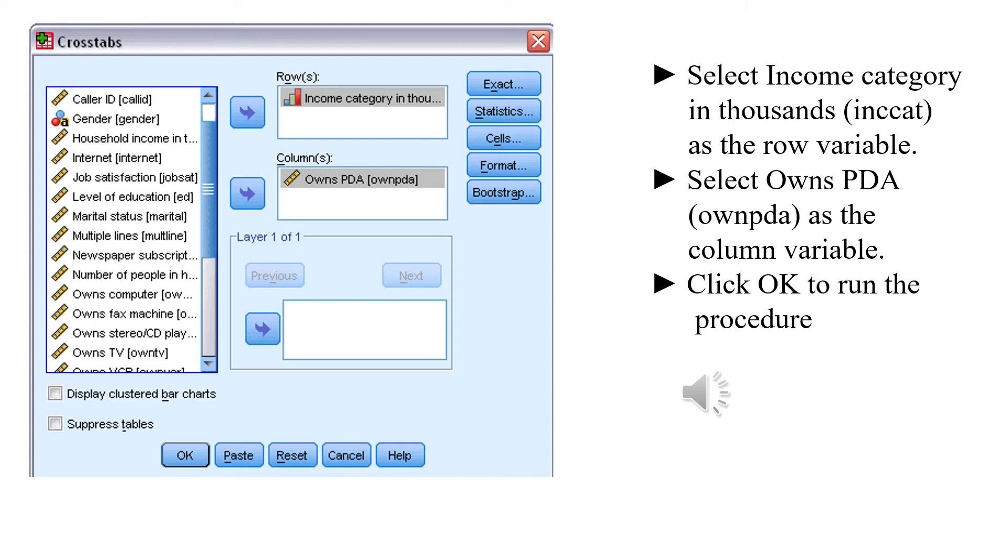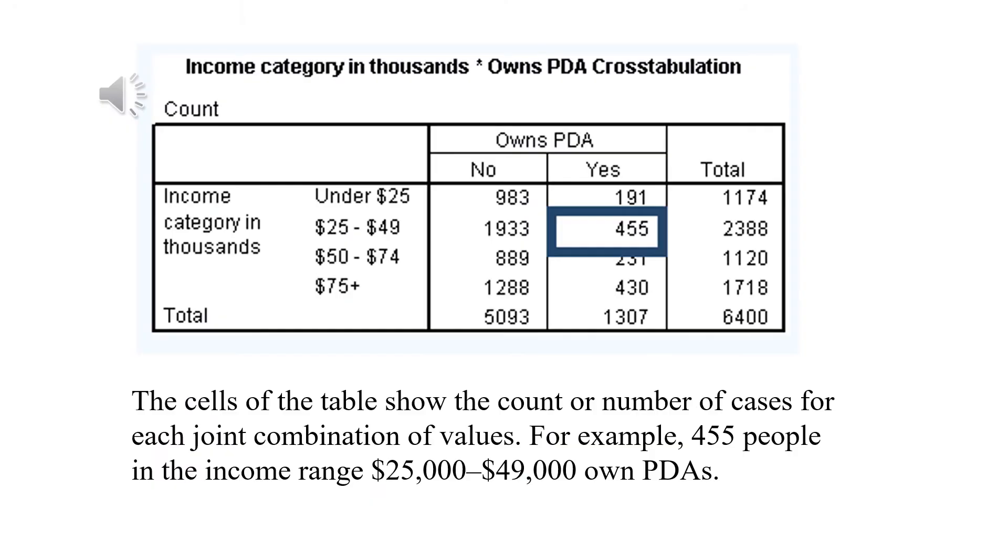the variable will be presented in column and pass it to the right tray using the arrow. For now, let's start just with two variables. Click OK and let's see what we are going to get.